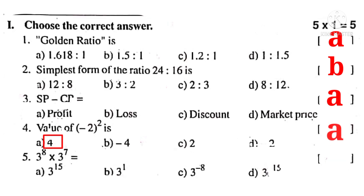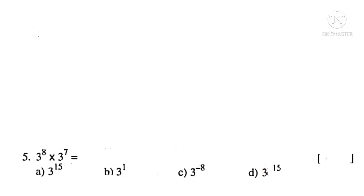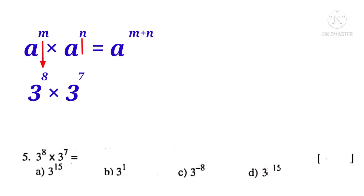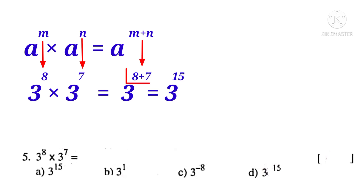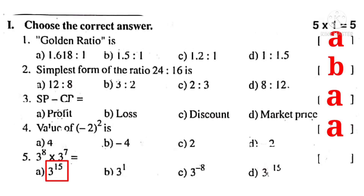Number 5: 3 power 8 into 3 power 7. Using the formula A power M into A power N equals A power M plus N, where A is the base and M, N are the powers. So 3 power 8 into 3 power 7 equals 3 power 15. The correct choice is A.